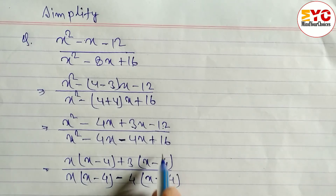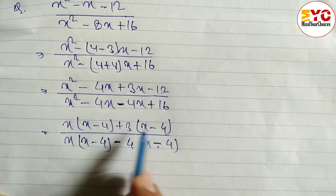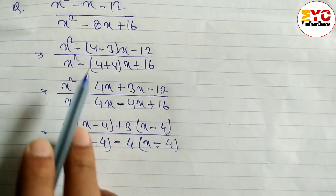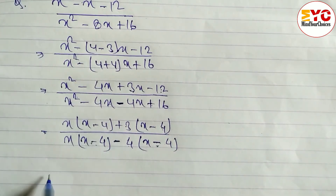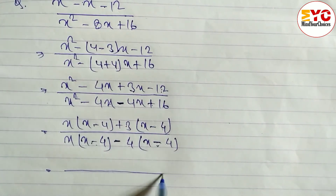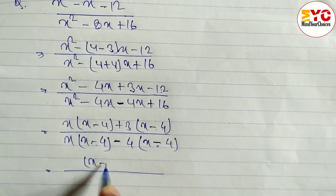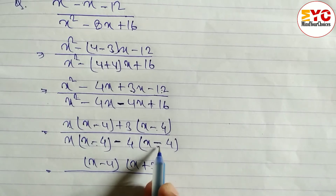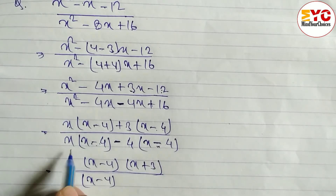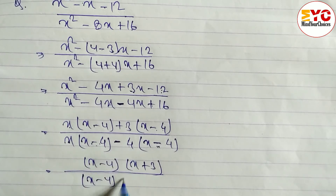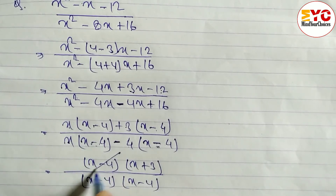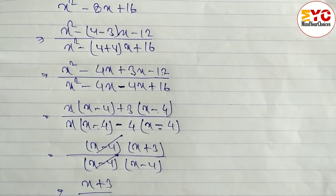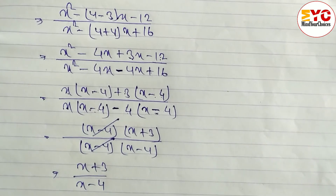From 4 and 16 take 4 common, remaining x−4. This bracket always must be the same — if not, a mistake was made. So we have x−4 common in numerator, remaining x+3. Similarly x−4 common in denominator, remaining x−4. We cancel one x−4. The remaining answer is (x+3)/(x−4).